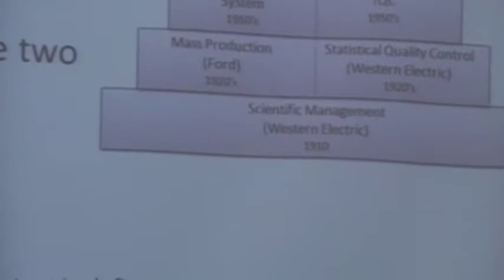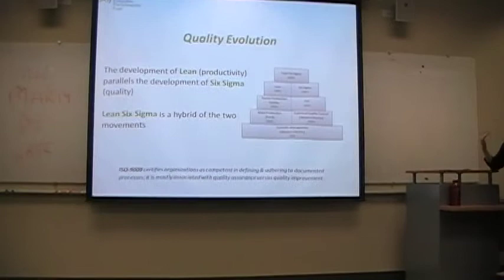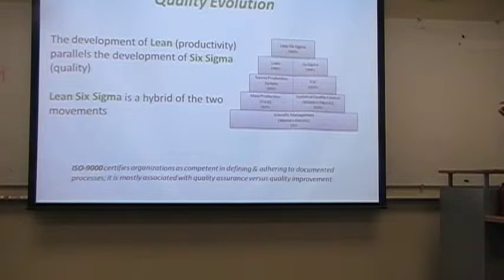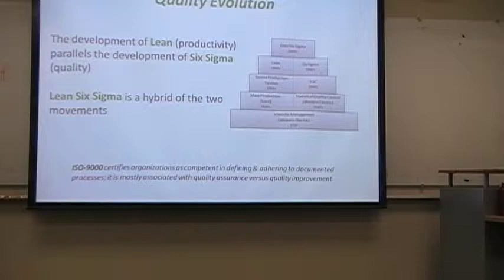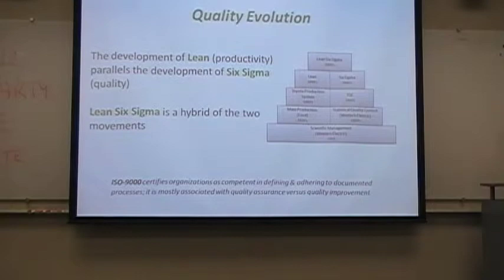You hear about Lean, and Lean is kind of the left side of this. They both really have their roots back to the turn of the century with Western Electric, and they kept growing simultaneously. A lot of it came out of the automotive industry as far as Lean, looking for ways to get more efficient. The quality piece really came up through Deming's work over in Japan. The difference between ISO 9000 and this is that's really focused on quality assurance versus this is focused on improving it.